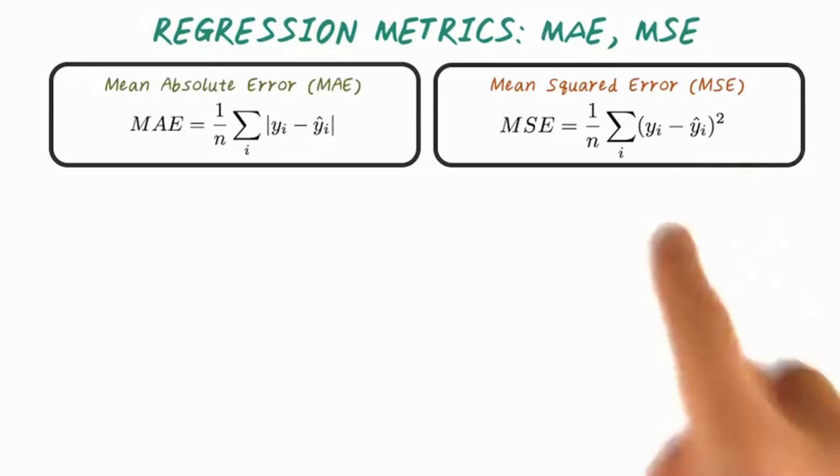MSE is easier to work with because the derivative of the square term is linear, but MSE will be greatly affected by outliers because of the square term as well.